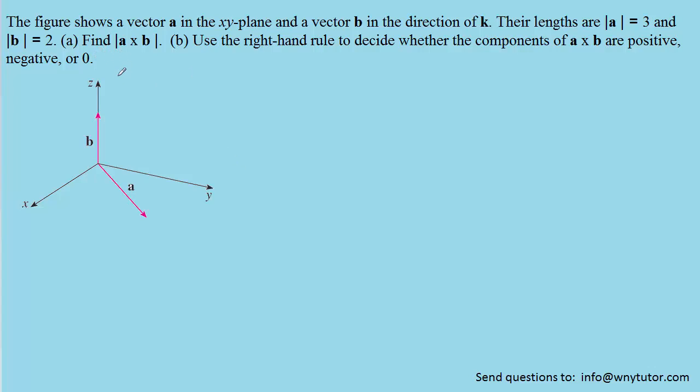Part A is essentially asking us the length of the cross product between vectors A and B. We know that it's asking for the length because of the absolute value symbols that surround A cross B.